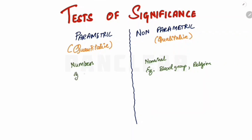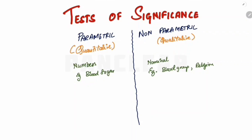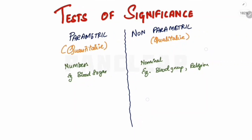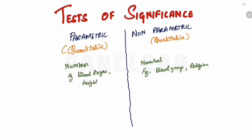A parametric example is blood sugar. Blood sugar is a particular numerical value. We are going to test the group and classify into normal, pre-diabetic, and diabetic. So height, weight — these are all numerical data used in parametric tests.